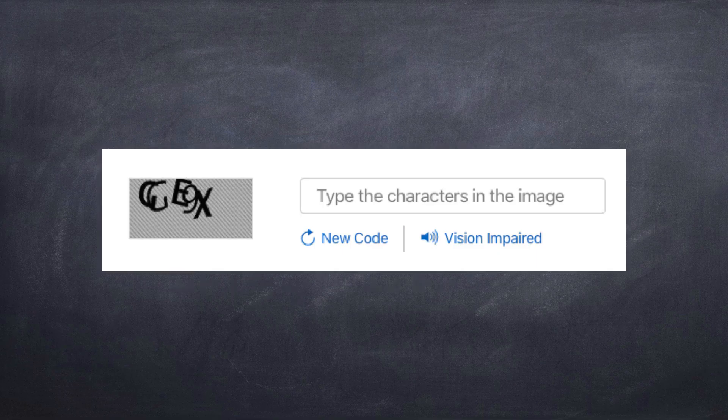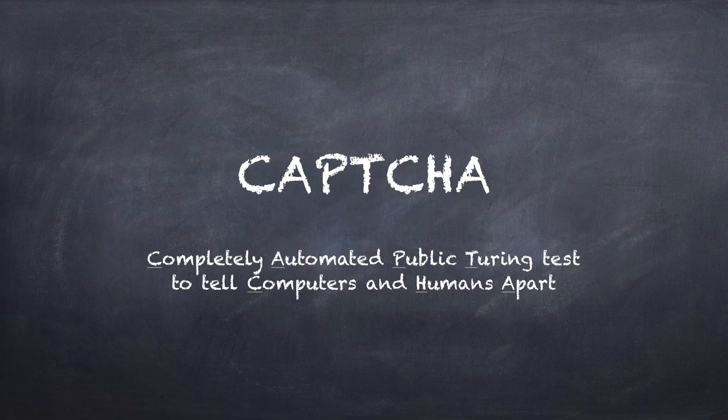CAPTCHA stands for Completely Automated Public Turing Test to Tell Computers and Humans Apart. Turing stands for Alan Turing, the famous mathematician and early computer scientist who did so much for computers and cryptography, and also came up with the idea of having a test to determine if something was human or a computer.